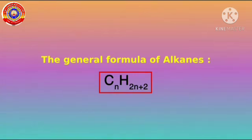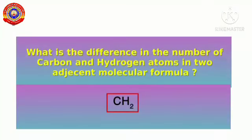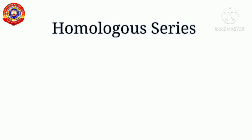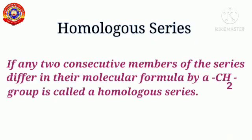Remember the general formula of alkanes: CₙH₂ₙ₊₂. We saw that there exists a CH₂ difference between any two successive alkanes. Such a series of compounds is known as a homologous series. Homologous series are series of compounds in which any two consecutive members differ in their molecular formula by a CH₂ group.